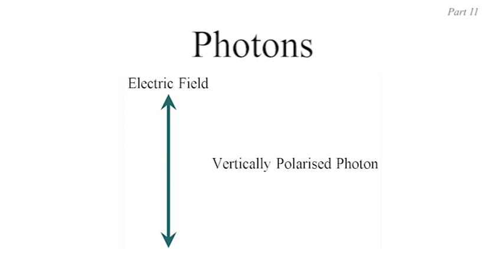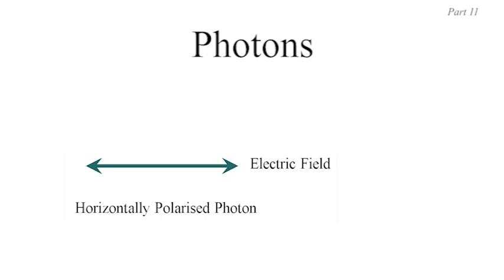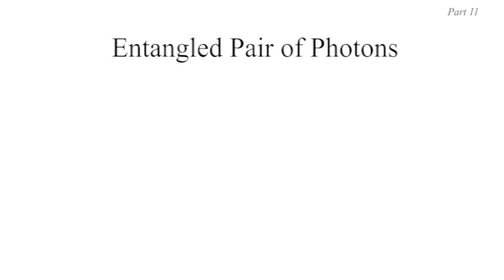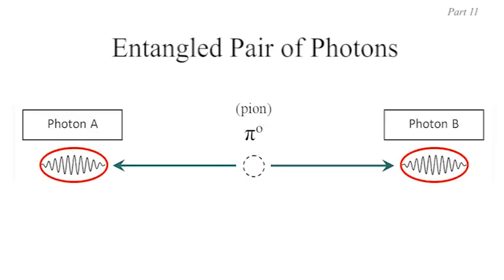To make diagrams of linear polarization less messy, we're going to ignore the magnetic field oscillations and concentrate only on the electric field. A vertically polarized photon will be represented with a vertical double-headed arrow, and a horizontally polarized photon with a horizontal one — ignoring the corresponding magnetic field. It's the electric field that will determine how we label polarization as vertical, horizontal, or some other direction.